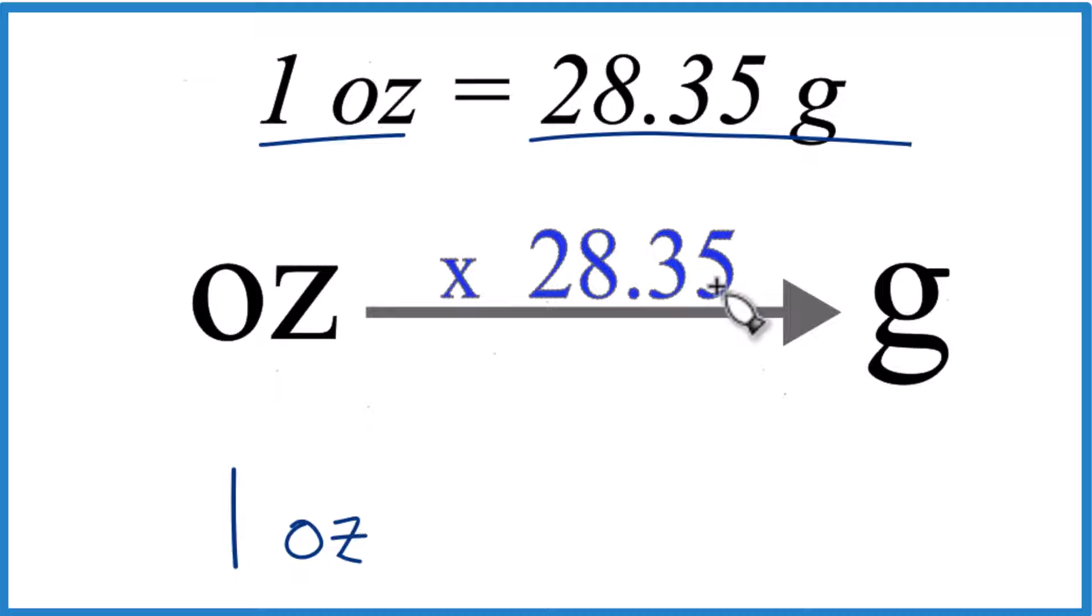So if you're going from ounces to grams, any number of ounces, one to one eighth of an ounce to grams, you're going to multiply by 28.35. So we have one ounce here. We're going to multiply by 28.35.